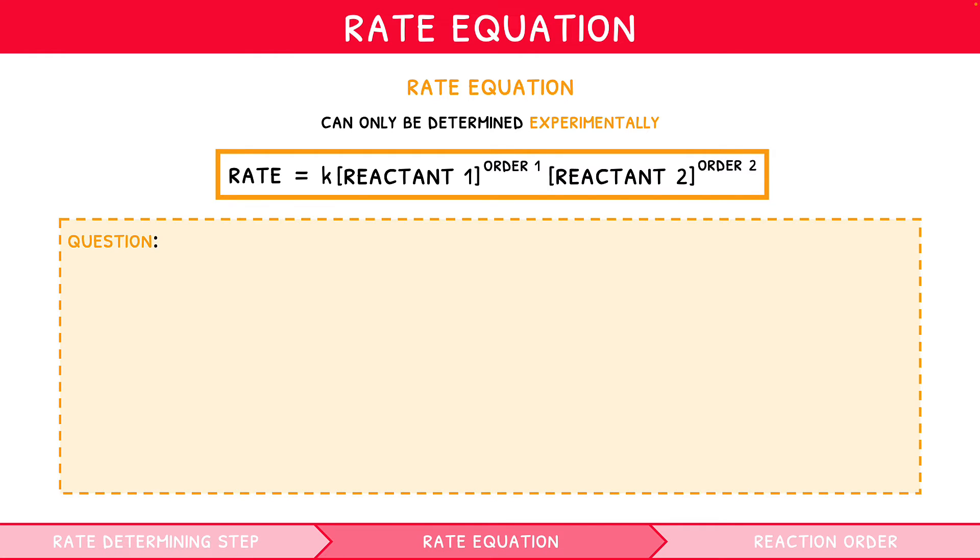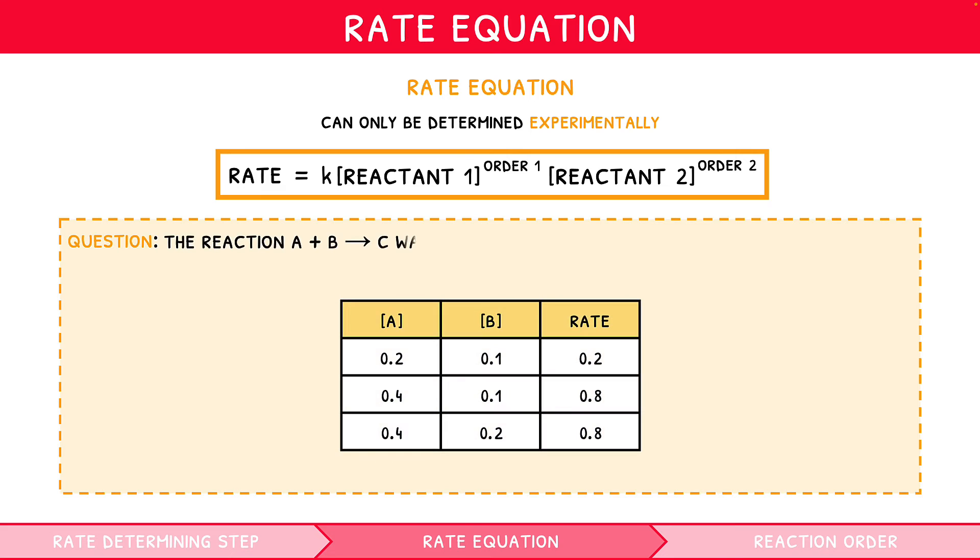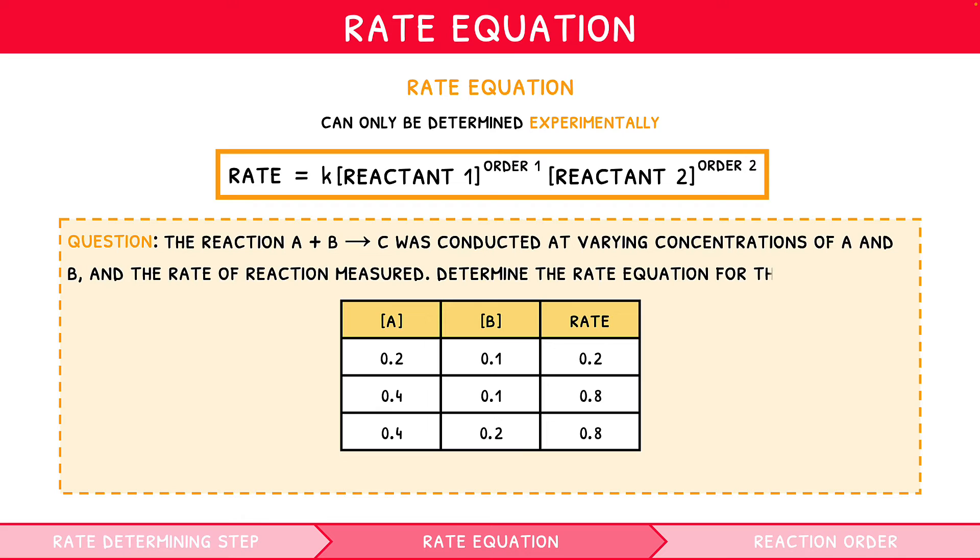Let's take a look at an example. The following reaction was conducted at varying concentrations of A and B, and the rate of reaction measured. This information is shown in the table below. Determine the rate equation for this reaction. So, we start by finding the order of each reactant. To do this, find two example reactions in which only one reactant was altered in concentration, and then compare the rate of reaction.